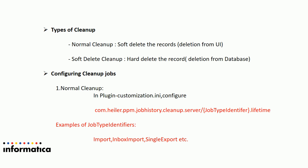Regarding types of cleanup jobs, there are two types. The first is the normal cleanup job, which is a soft deletion — it removes records only from the UI but does not physically delete them from the database. The second is the soft delete cleanup job, which performs a hard delete from the database. The soft delete cleanup job only picks up records that have already been soft deleted by the normal cleanup job, then hard deletes them from the database.